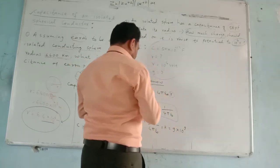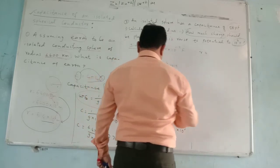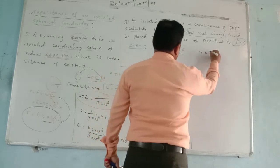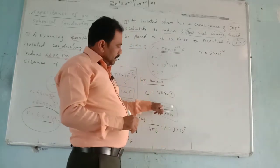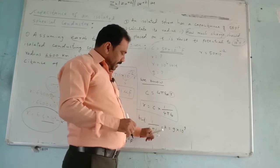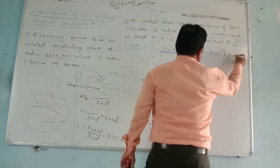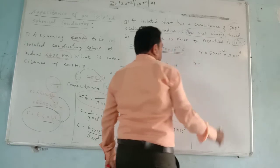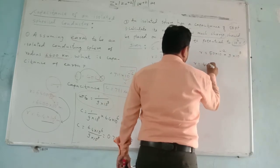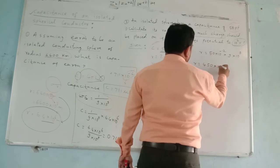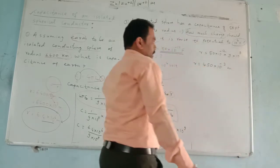Therefore R is exactly equal to C multiplied by (1/4πε₀). Substituting the values: R = 50 × 10⁻¹² multiplied by 9 × 10⁹. Calculating: 50 × 9 = 450, and the power is 10⁻¹² × 10⁹ = 10⁻³. So R = 45 × 10⁻² meter.